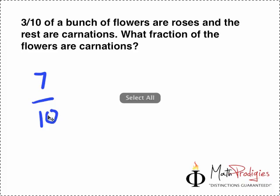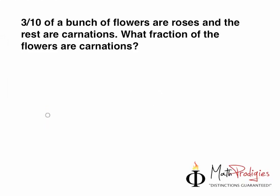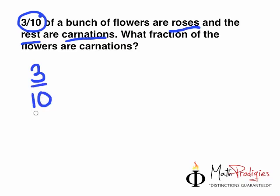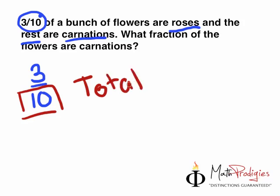Now let me explain to you how to do this. It's very, very easy. First of all, all you have to do is imagine a bunch of flowers. You all love a bunch of flowers, right? A bunch of flowers is made out of roses, which is 3 tenths of it, and the rest are carnations. Whenever you see the number 3 over 10, the bottom number means the total number of units.